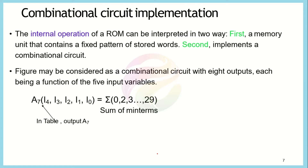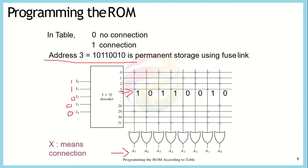The ROM operation can be interpreted in two different ways. The first is as memory — any given location represents a different stored word or stored information. Second, it can be seen as an implementation of Boolean functions. For example, considering just output a7 as a function of the five inputs i0 to i4, wherever a one is present it represents a minterm, since the decoder with the OR gate is a minterm generator. Thus a7 is represented by minterms 0, 2, 3, and 29 as a combinational function.